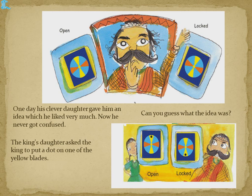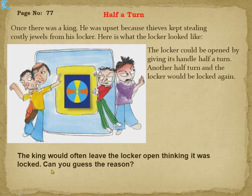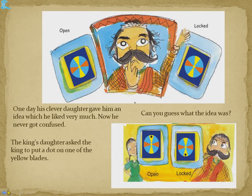In the locker, the top position is the open position. Half a turn means it must cover half the part — from the top position to the bottom. When it turns to there, it completes a half turn, but the same yellow design appears again, which confused the king.